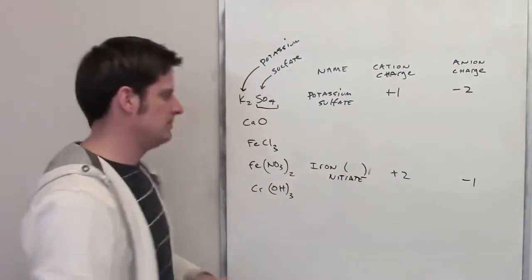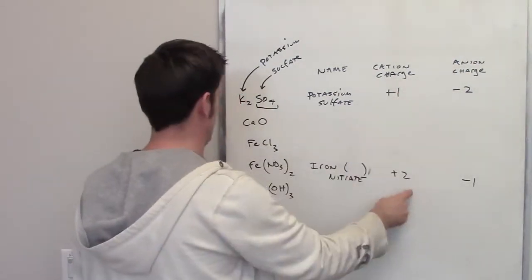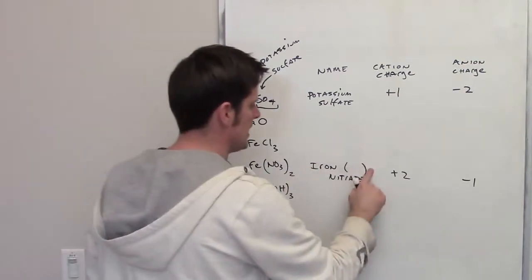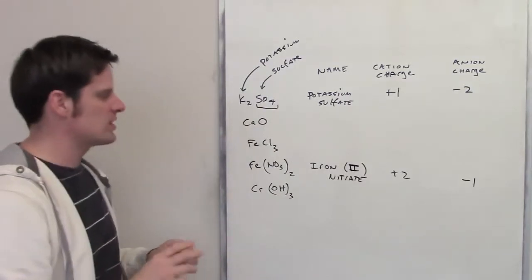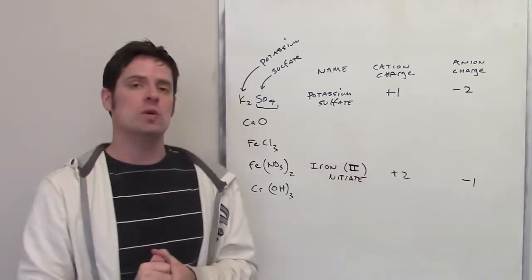Okay, hopefully you're okay with that. Now because that cation of iron is going to have a plus two charge, in the name I will go ahead and throw down a Roman numeral 2. So the final name of this is going to be iron Roman numeral 2 nitrate.